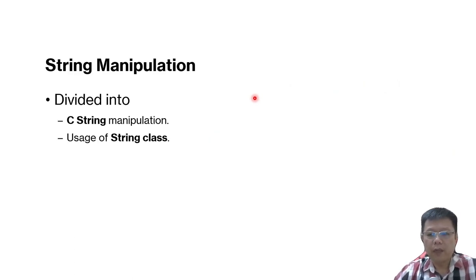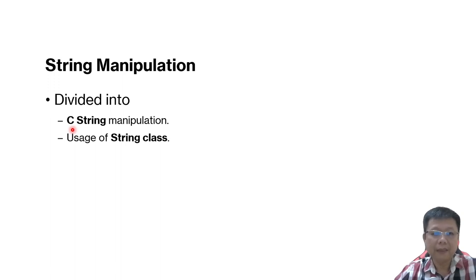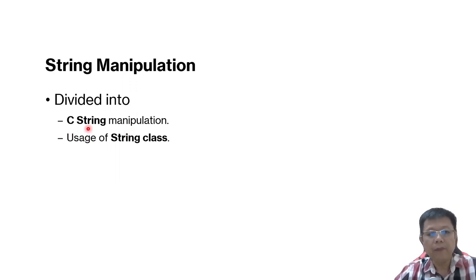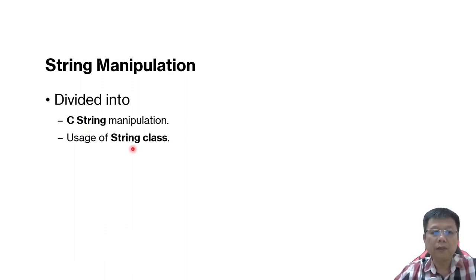We have two ways basically in manipulating strings. The first one is using conventional style C string manipulations. We are learning about C++, which is derived from C itself. Before C++ came along, programmers already designed how to manipulate strings in C — that's why they call it C string. And when C programming evolved into C++, we use string classes. So there are two ways.